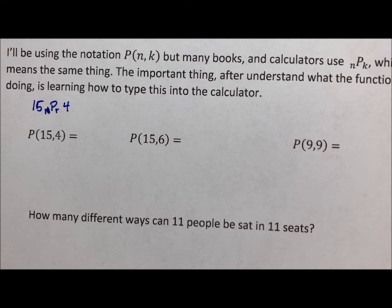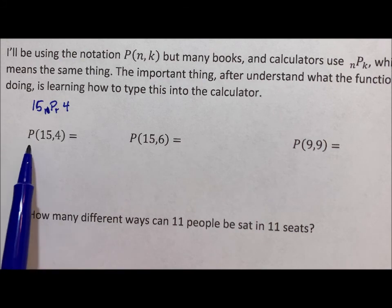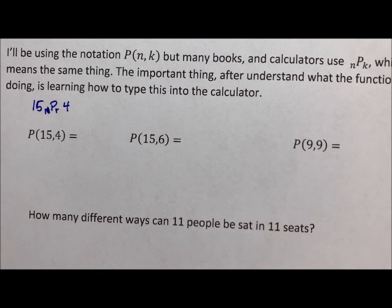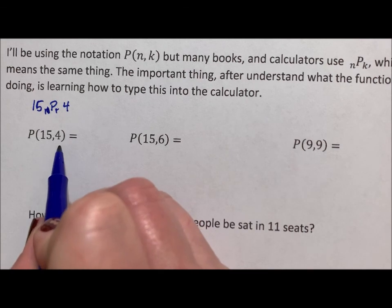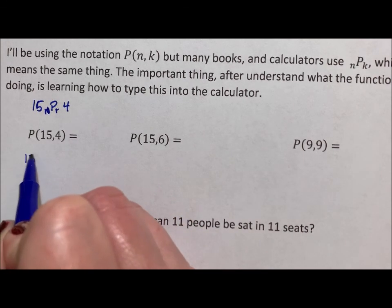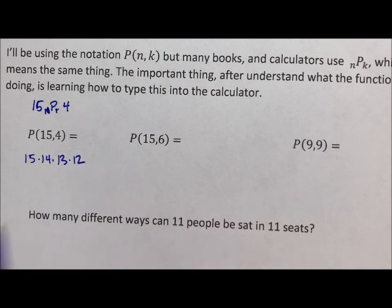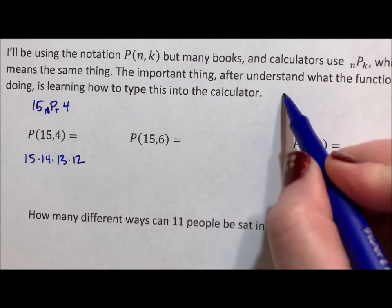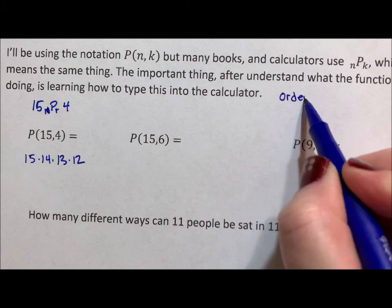So what does permutation mean? It basically means a truncated factorial. It says 15 factorial, 15 times 14, 13, 12, but only do the first four. So this literally means 15 times 14 times 13 times 12. It means do the first four numbers of 15 factorial. That's what permutation means. A truncated factorial. We utilize it when order matters. So order matters.